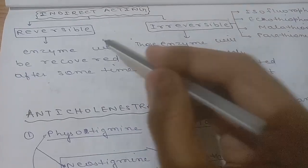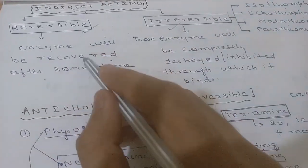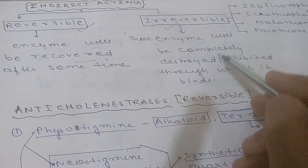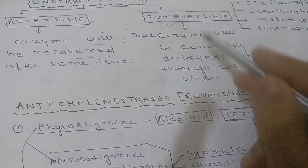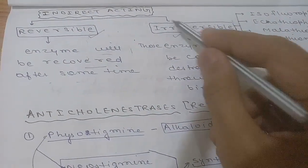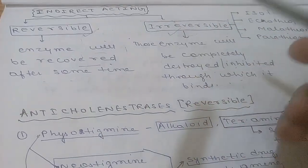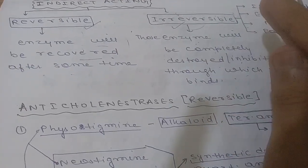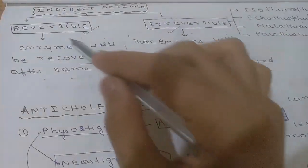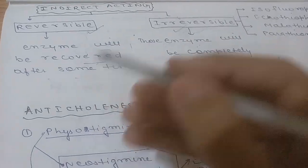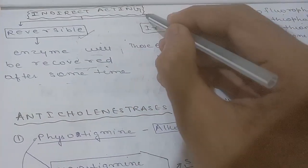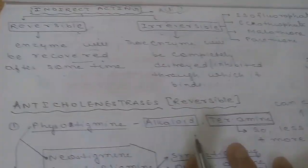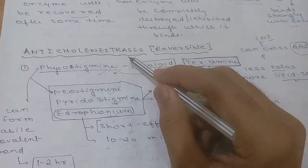Indirectly acting drugs are divided into two groups: reversible and irreversible. Reversible means the enzyme will be recovered after some time. Irreversible means the enzyme will be completely inhibited — when an irreversible drug binds to cholinesterase, it leads to the destruction of that enzyme. Reversible drugs allow the enzyme to be recovered after some time.